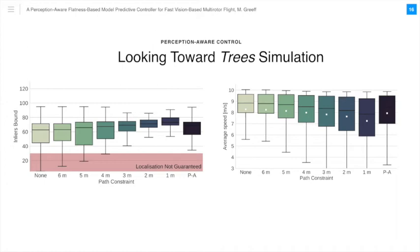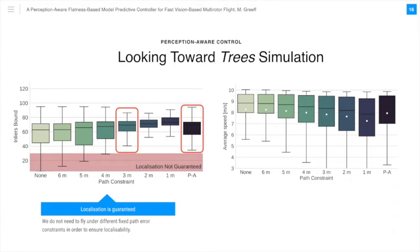For case 1, when we are looking towards the trees, we show that under our perception-aware constraint, we explicitly guarantee localization. And unlike perception agnostic approaches, we do not need to fly under different fixed path error constraints in order to find a constraint that ensures localizability. Moreover, we achieve a slightly faster flight over the 3 meter fixed path error constraint.